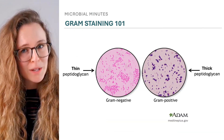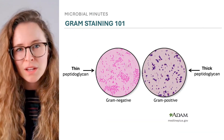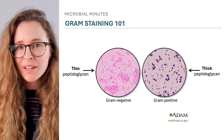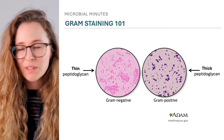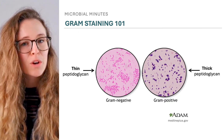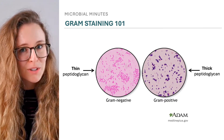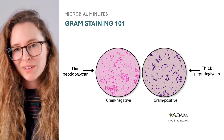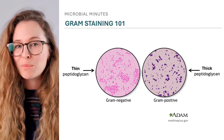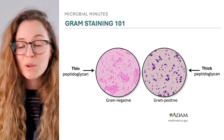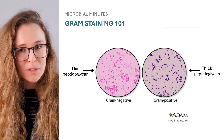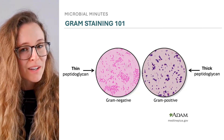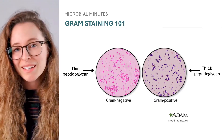Gram stain differentiates bacteria based on the thickness of the peptidoglycan layers surrounding the cell. Gram-positive bacteria have a thick peptidoglycan layer and stain blue to purple, whereas gram-negative bacteria, which have a thin layer, stain pink.